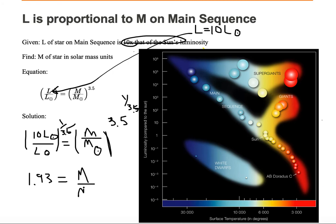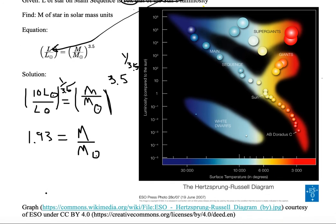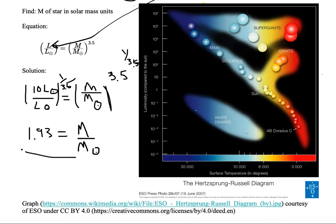We want our answer expressed in solar mass units. So all we need to do is move that mass of the sun over to the other side of the equation. So we get M is equal to 1.93 times the mass of the sun. And that's our answer.